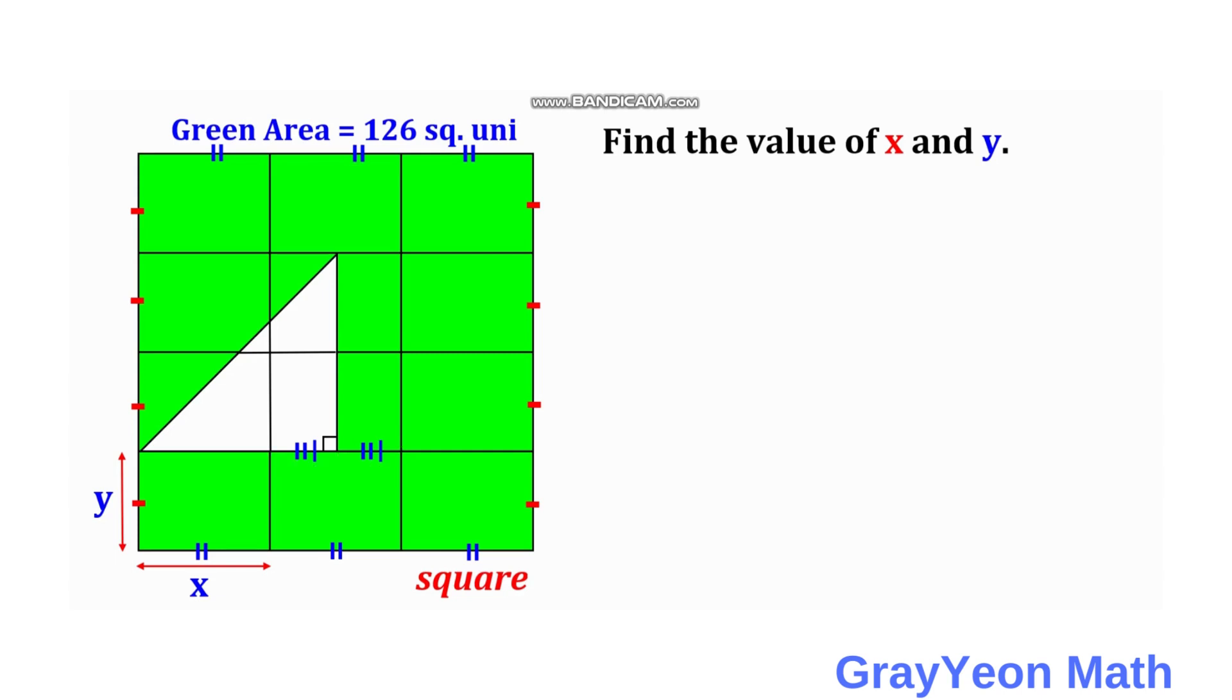First thing we need to do is write an equation about this figure. The area total, AT, equals the green portion which is 126 plus the area of the triangle. The area total is 12 portions of x and y. So we have 12xy equals 126 plus the area of the triangle.